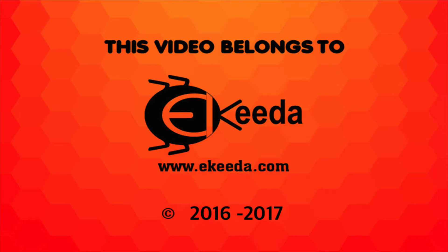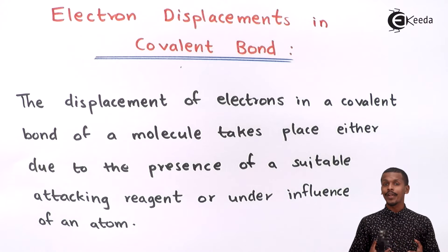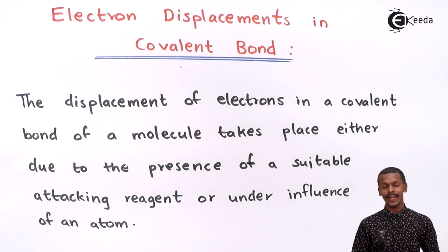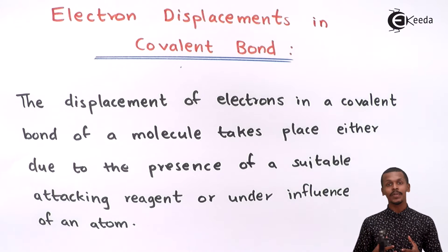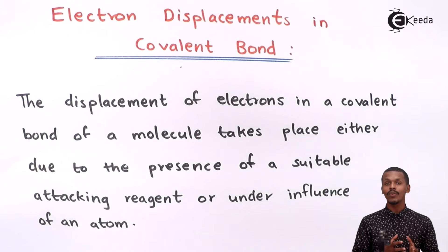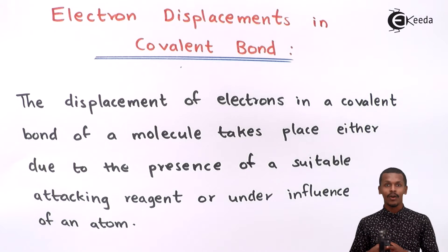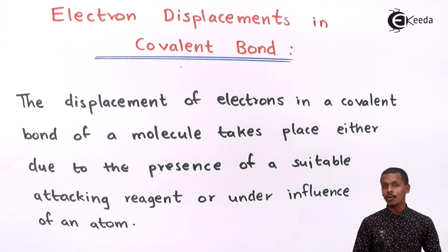Hello friends. Now we are going to discuss about electron displacement that takes place in a covalent bond. This happens because of the polarity or because of the atoms that are being attached in a particular molecule. We know that a covalent bond is formed because of the sharing of electrons, but there is a kind of influence that could take place in the sharing of electrons, and that would lead us to electron displacement in a covalent bond.